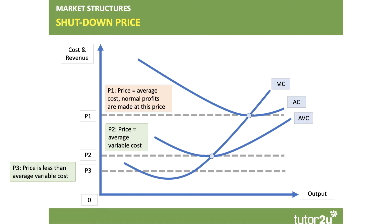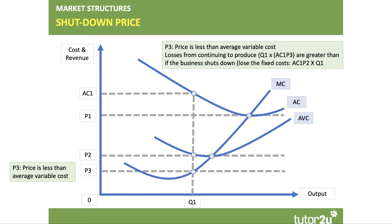But if the price is really low — it could be there's been a collapse in demand, or a deep recession driving the price down — in this market the firm is a price taker. At P3, they cannot cover their variable costs. If we take an output level, let's say Q1, they're getting price P3 and the average cost is AC1, so they're making a big loss. The price is well below average cost, and I'll shade in the area of loss.